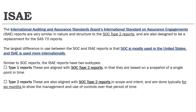The last topic is ISAE — the International Auditing and Assurance Standards Board standard. ISAE reports are similar in nature to SOC 2 Type 2 reports — they cover effectiveness of controls over a period. The key difference is: SOC is mostly used in the United States, whereas ISAE is used internationally. Another difference: in ISAE, the Type 2 report is further subdivided into Type 1 and Type 2, whereas SOC Type 2 is not subdivided further.